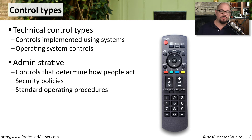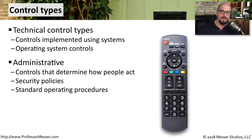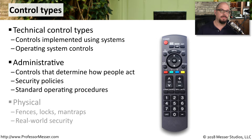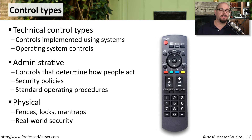There are also administrative control types that can help people understand how to manage the security in your environment. Formal security policies and standard operating procedures are good examples of an administrative control type. And we have physical control types that exist in the real world, such as fences or locks that separate people physically from our systems.